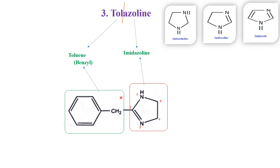So, what is tolazoline? It is the fusion of the toluene ring with imidazolin. That is why 'tol' indicates the toluene/benzyl part, and 'azolin' indicates the presence of imidazolin. The parent structure is imidazolin, and at position two of imidazolin, the toluene/benzyl group is connected. That is why it is called 2-benzyl-2-imidazolin. It is called 2-imidazolin because the double bond is present between positions two and three.